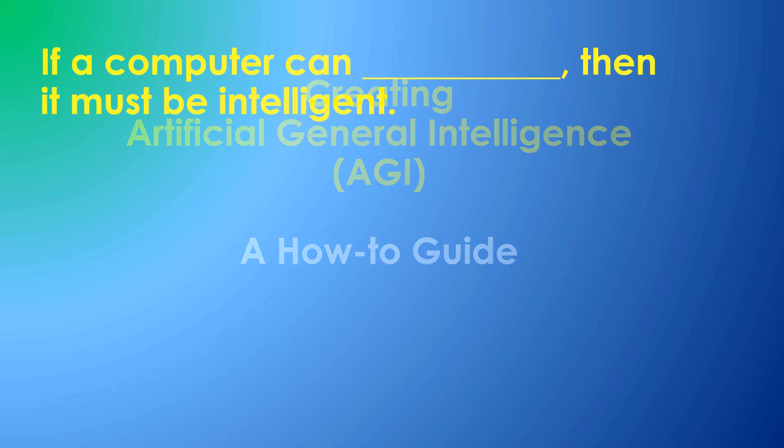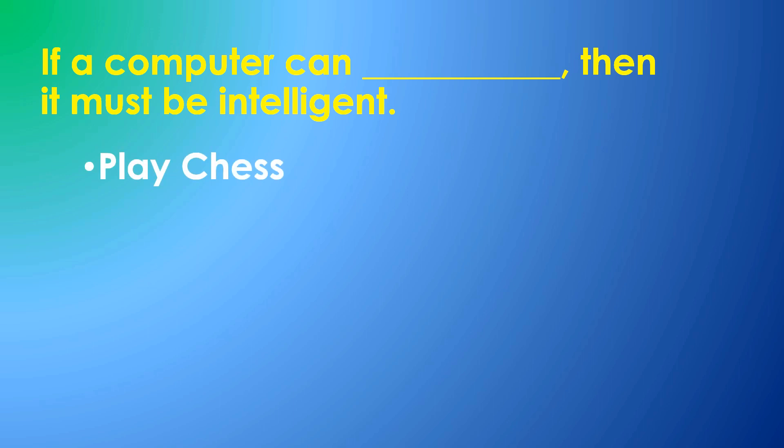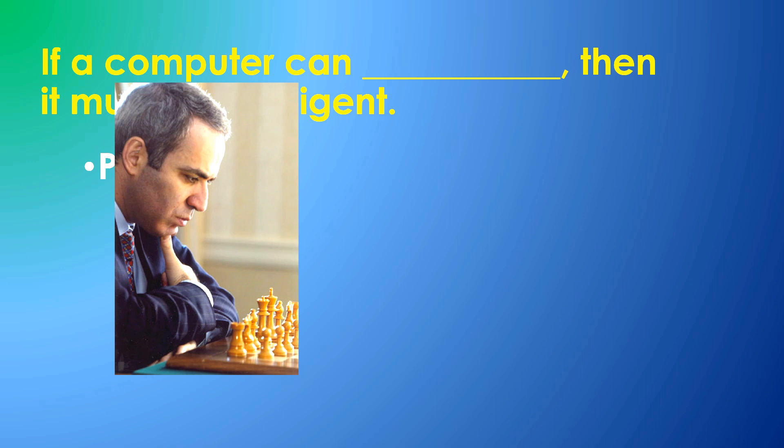For 50 years, we said if a computer can do something, then it must be intelligent. A famous early example involved the game of chess. If a computer could play a good game of chess, then it must be intelligent.